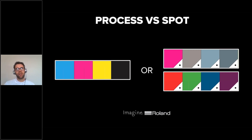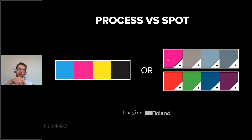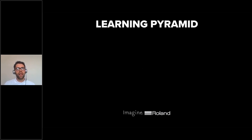In the digital realm, spot colors can either produce a particular color output — as you can see in the swatches at the bottom here — or they can trigger a particular function: telling your machine to cut, print white, print gloss, or print primer, depending on your machine's configuration. You also have the opportunity to do a normal cut — cutting through the top sheet of vinyl — or a perforated cut, which goes through the backing sheet as well, and there's a particular spot color that allows you to do that.